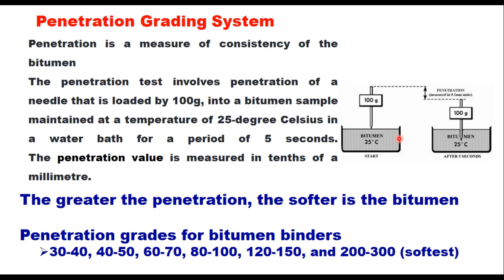Based on penetration, the penetration grades for bitumen binder were identified as 30/40, 40/50, up to 200/300. The hardest grade is 30/40 and the softest grade is 200/300. This range indicates the penetration value at 25°C. So if the bitumen is graded as 60/70, that means when you determine its penetration value at 25°C, it will be between 60 and 70, or 6 and 7 millimetres.